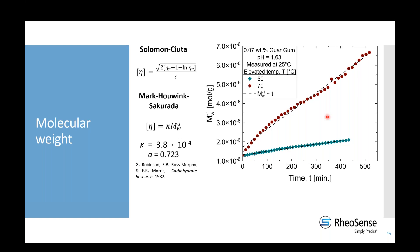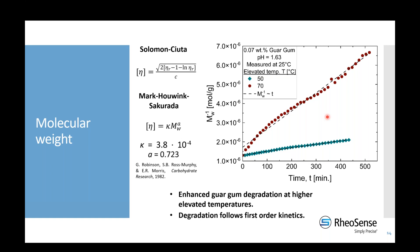This first-order kinetics behavior was previously described as random with respect to chain cleavage, where the rate of reaction depends on the concentration of undegraded polymer chains. This linear relationship has been observed and published in the literature, but only for guar gum degradation at temperatures up to 50°C. It's also important to note that the initial molecular weight in the literature differs from ours, which may be due to differences in the source of the guar gum.